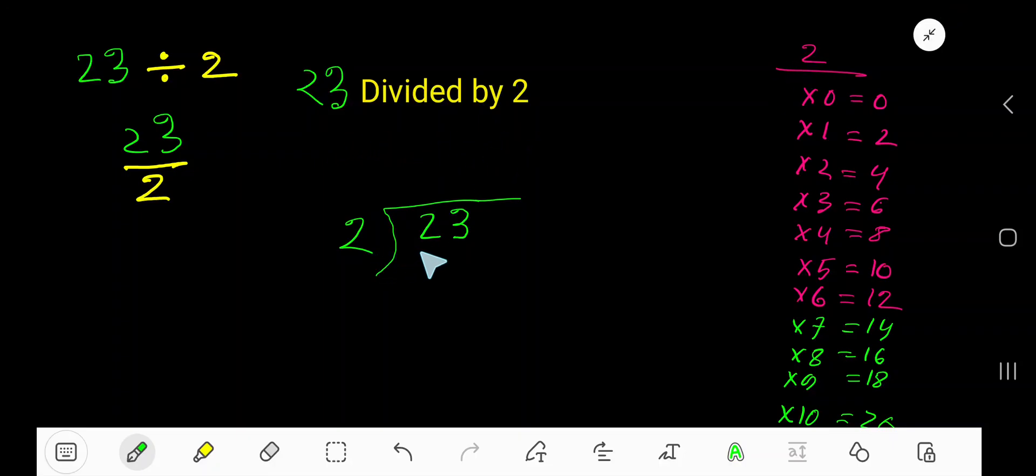23 divided by 2. 2 goes into 2 how many times? 1 times. 1 times 2 is 2, subtract, 0. Bring down this 3. 2 goes into 3 how many times? 1 times. 1 times 2 is 2, subtract, 1. So your answer is 11 remainder 1.